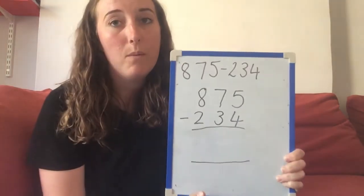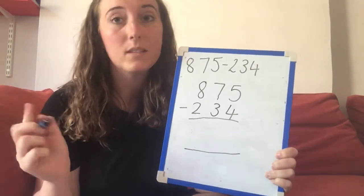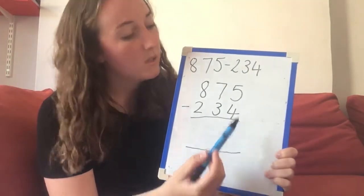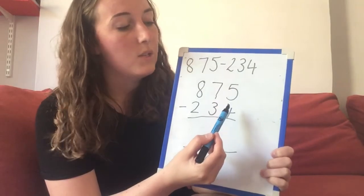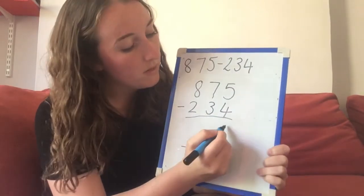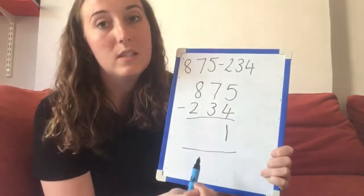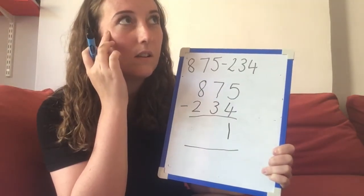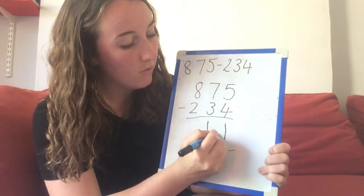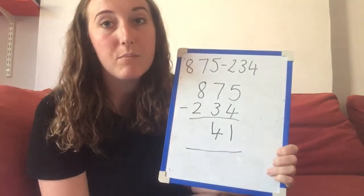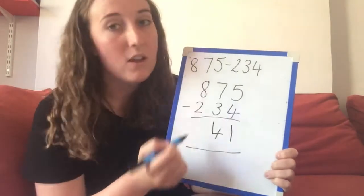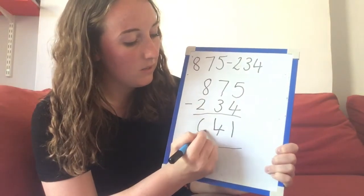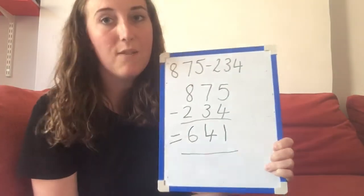Remember, when we're doing column addition or column subtraction we always start with the smallest digit. In this example our smallest digit is the ones column. So first I need to do 5 take away 4, which is 1, and I record this underneath. Then I need to do 7 tens take away 3 tens, which is 4 tens — that 4 represents 40. Then I do my hundreds column: 800 take away 200 which is 600. So my answer is 641.